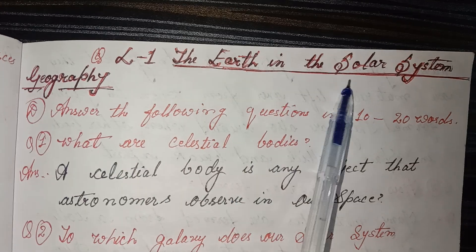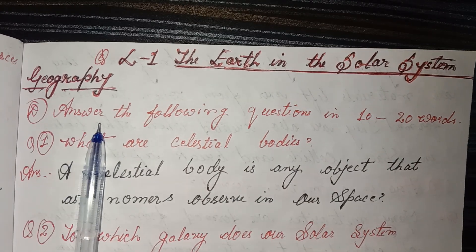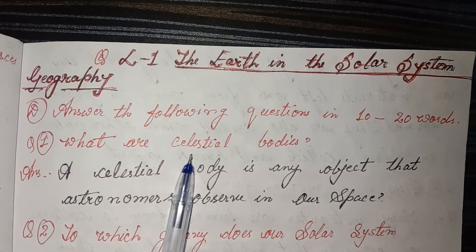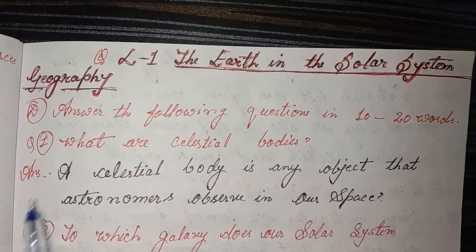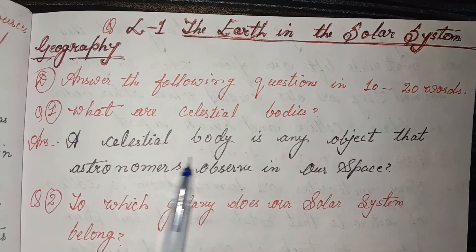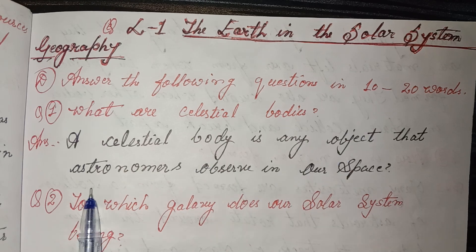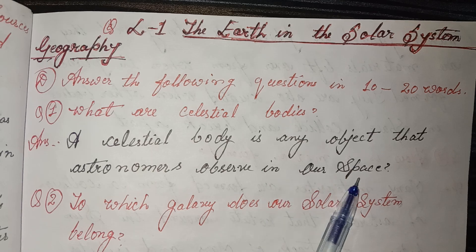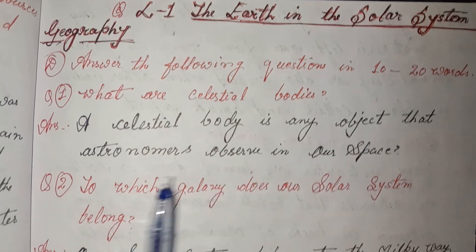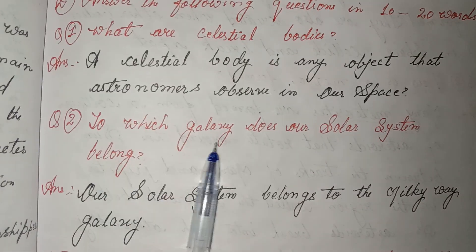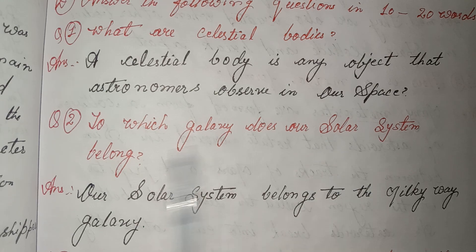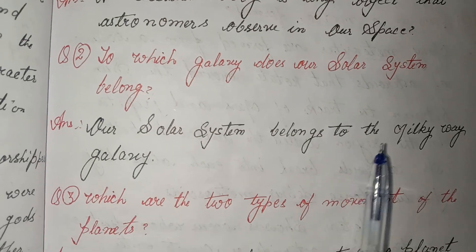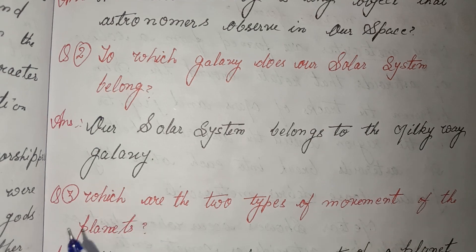The Earth in the solar system, geography. Answer the following questions in 10 to 20 words. First, what are celestial bodies? Answer: a celestial body is any object that astronomers observe in outer space. Second, to which galaxy does our solar system belong? Answer: our solar system belongs to the Milky Way galaxy.